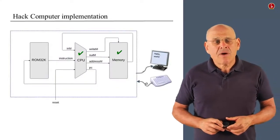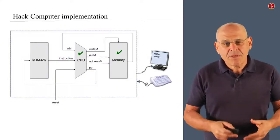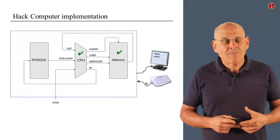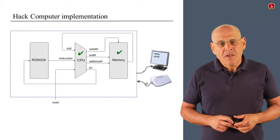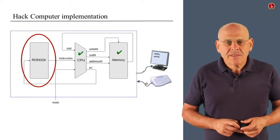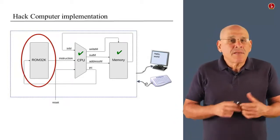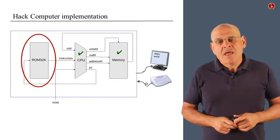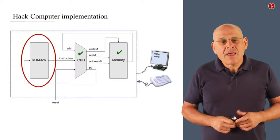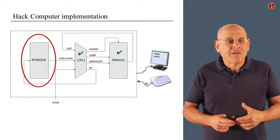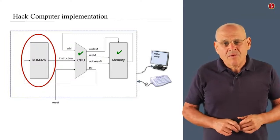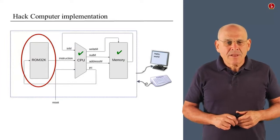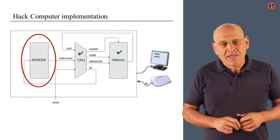All right, so we've resolved the CPU and the memory. And the only thing that remains to do is to figure out how to implement the ROM. Well, the ROM is really a simpler version of the RAM. It's just a RAM chip and yet it's a read-only device. So, it's actually easier to build than a RAM chip and therefore we decided not to bother with asking you to build it and we supply it as a built-in chip.